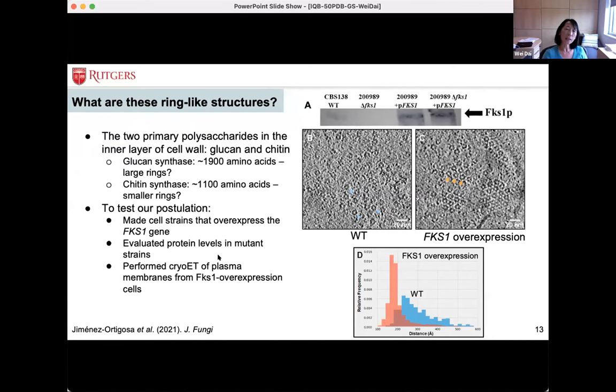To test our postulation, we decided to construct cell strains that overexpress the FKS1 gene, the catalytic subunit of glucan synthase. From Western blot analysis, we can see those strains have about three to four times increase in their overexpression level. We took plasma membrane from those overexpression strains and did tomography using membrane fractions from those cells. Compared to the wild type, we definitely see more of those large ring-like structures in the tomograms collected from the overexpression strains. The overexpression also shifted the distribution of the large ring-like structures in the clusters to tighter packing compared to wild type. Based on biochemistry data, tomography data, and structural analysis, we think the large ring-like structure is the glucan synthase that we're looking for.